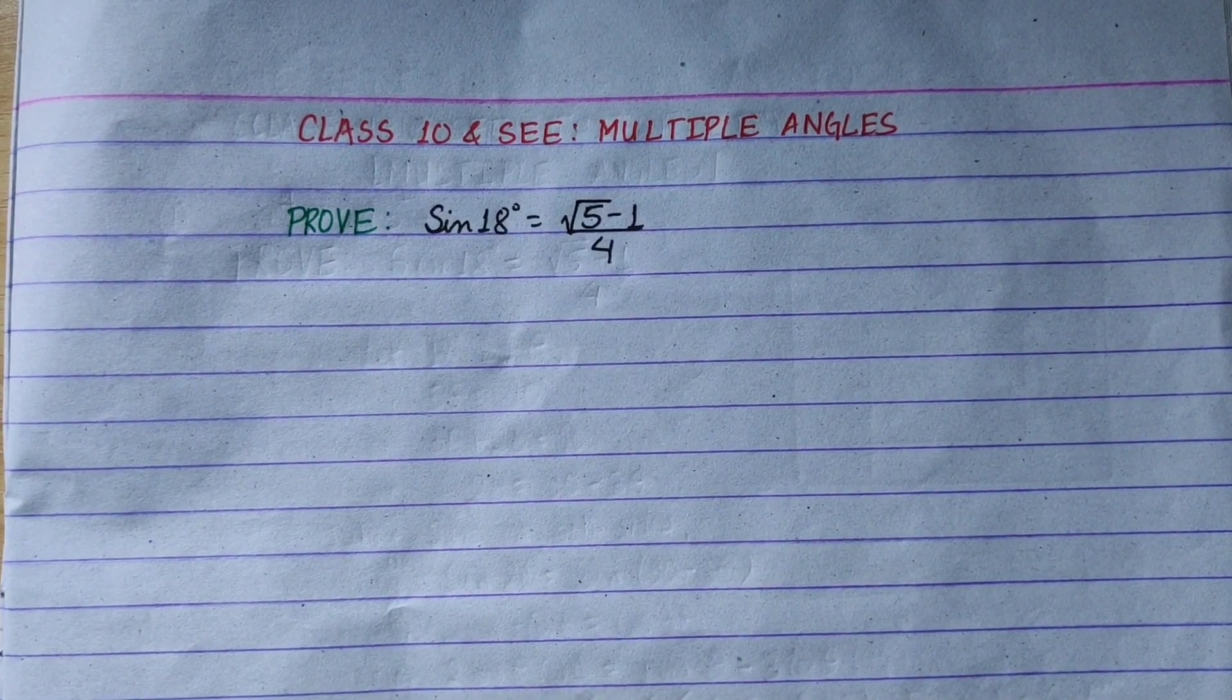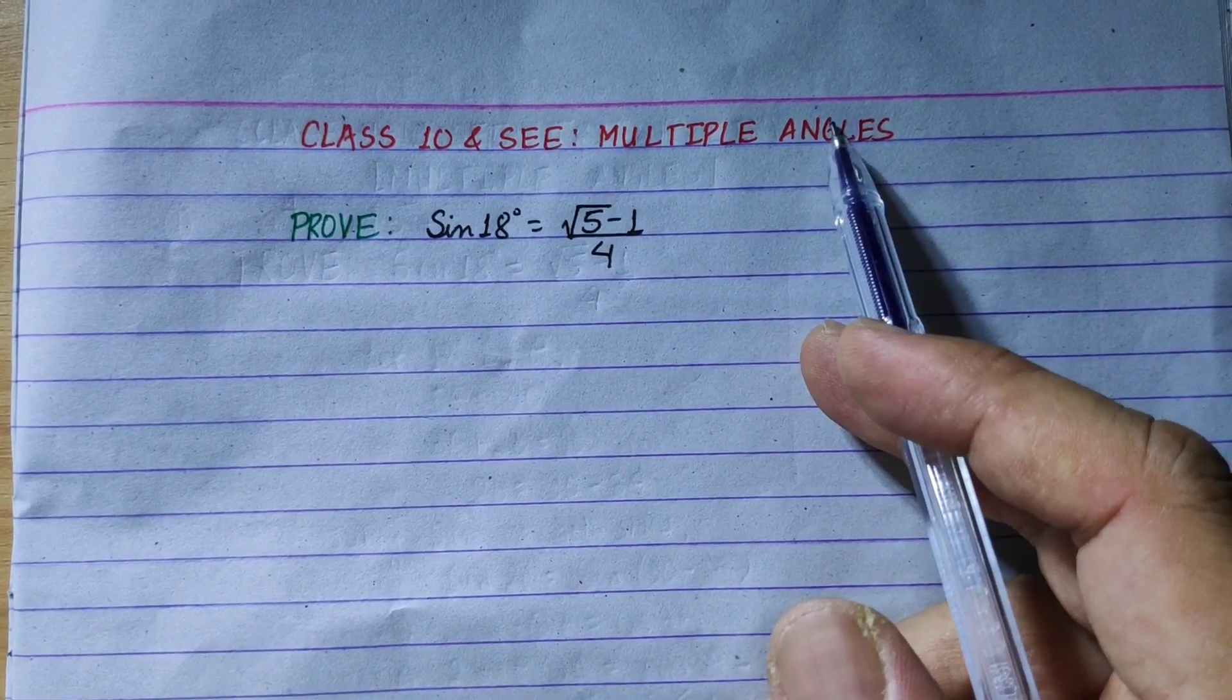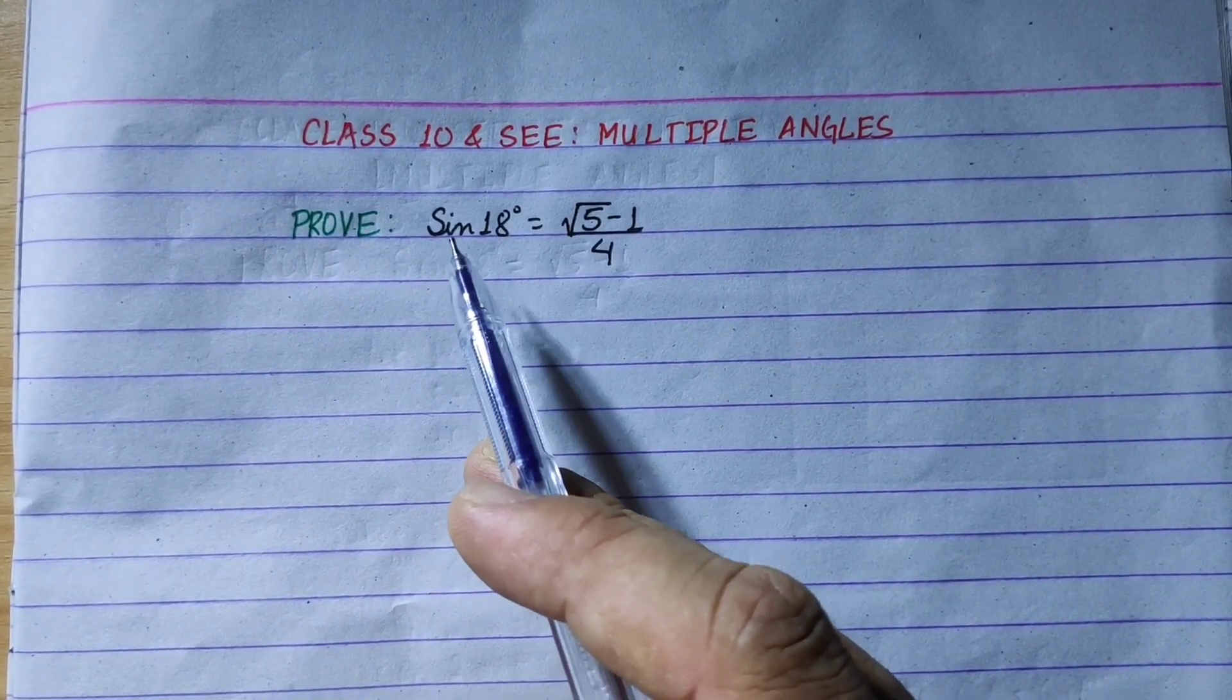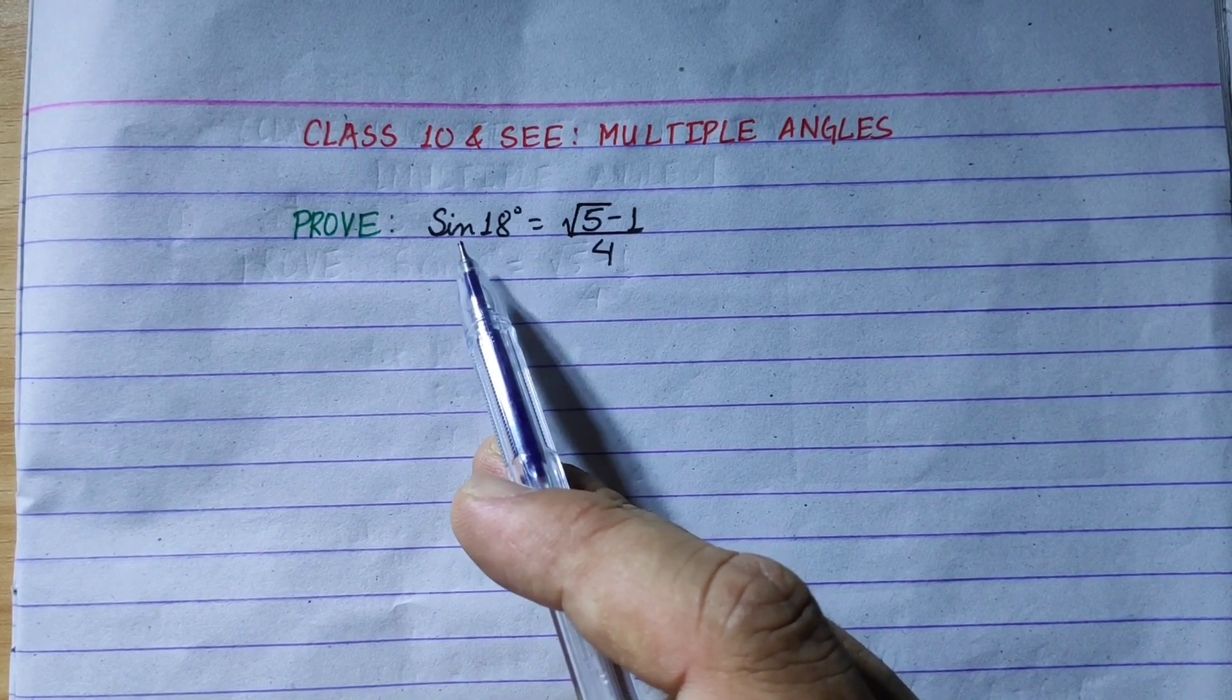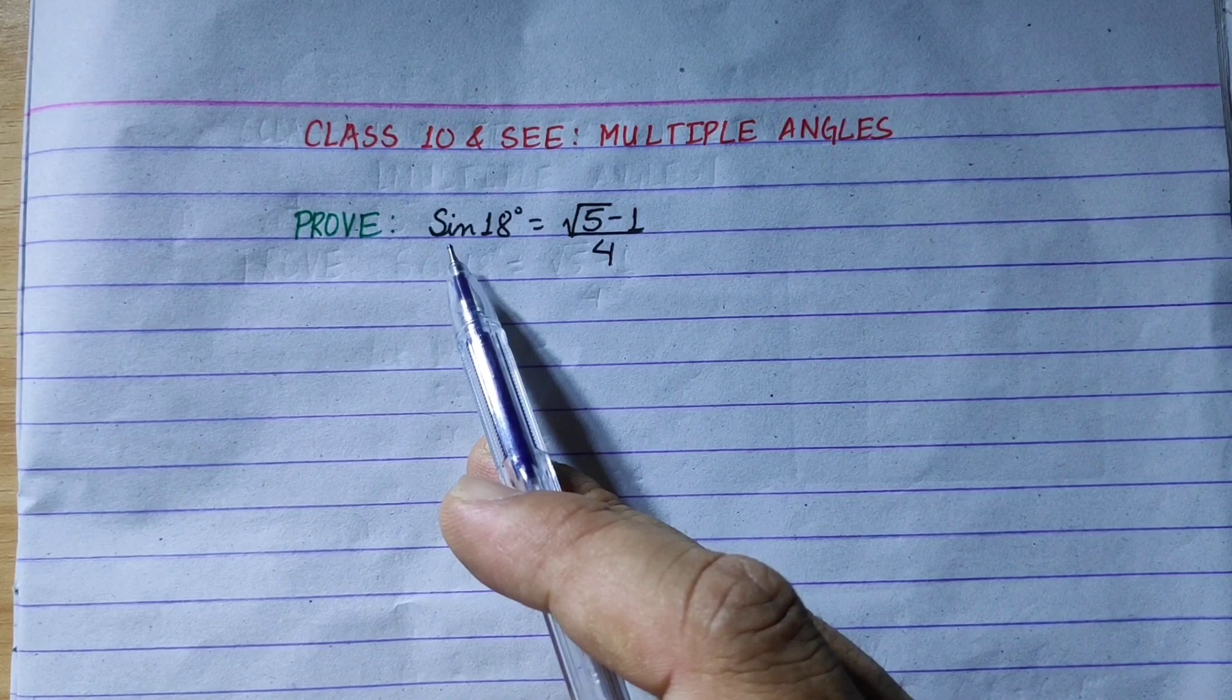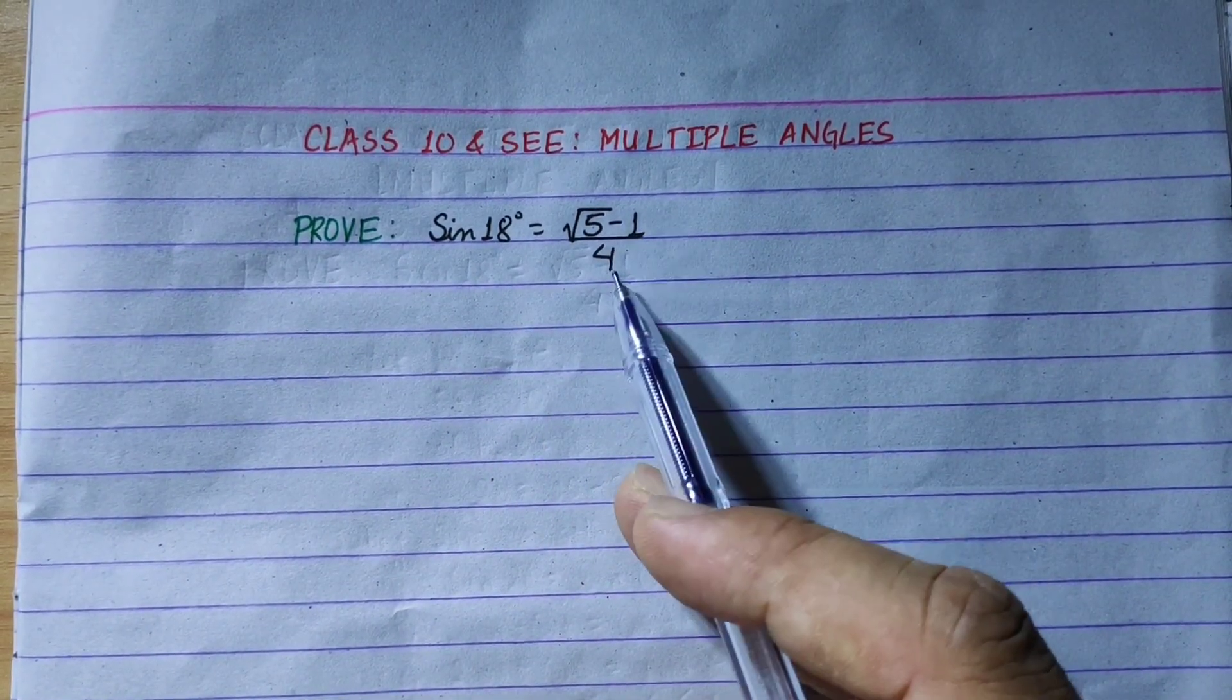Hi everyone. Today we will have multiple angles chapter in class 10. This is mainly standard exam. Let's prove it. sin 18 equals to root 5 minus 1 by 4.